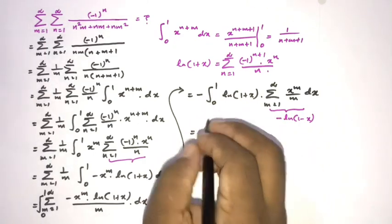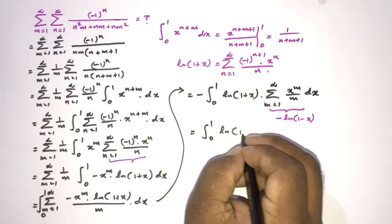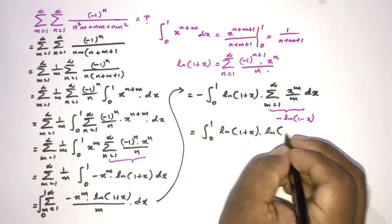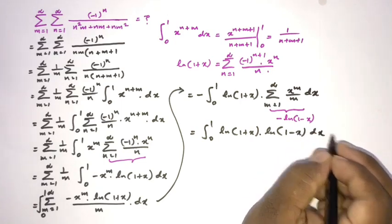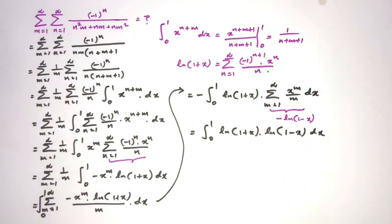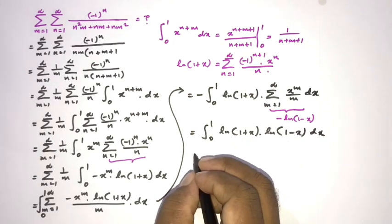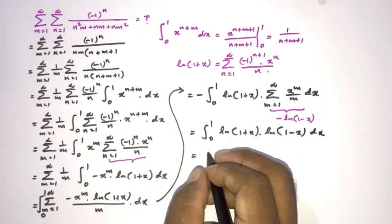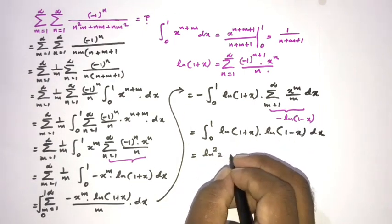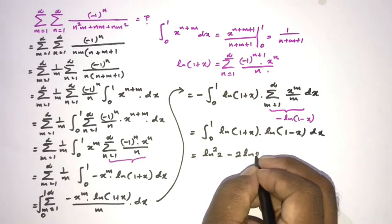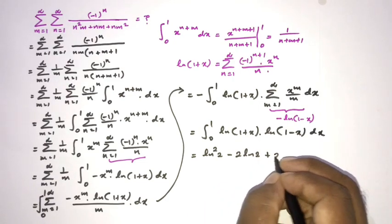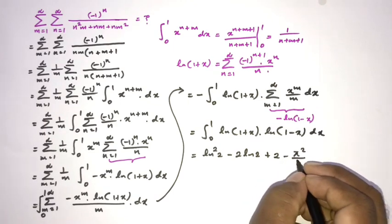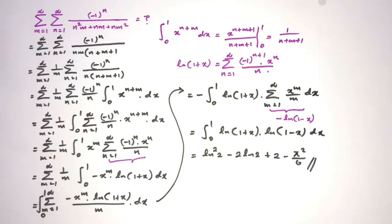We now have a very interesting integral. The answer is known: the integral from 0 to 1 of ln(1+x)·ln(1-x) dx equals ln²2 - 2·ln2 + 2 - π²/6. I'll add a link in the description and a card to the video showing this result. If you like this type of video, please subscribe to the channel. Thank you for watching.